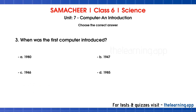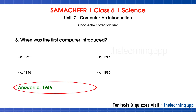Third question: When was the first computer introduced? Options are A. 1980, B. 1947, C. 1946, D. 1985. The correct answer is Option C, 1946.